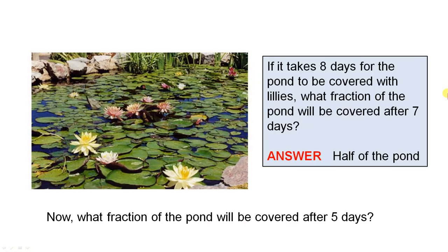So if it takes 8 days for the pond to be covered with lilies, what fraction of the pond will be covered after 7 days? Well, if we remember, each day the area doubles. So if the pond is fully covered after 8 days, that means after 7 days it must be half covered. So in other words, after 7 days half of the pond will be covered.